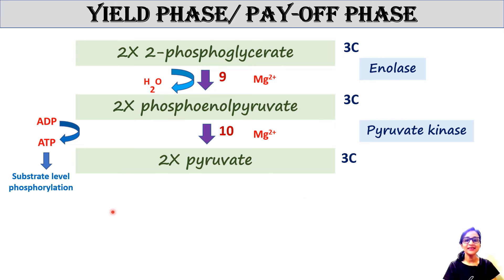Each molecule of 2-phosphoglycerate is converted into phosphoenolpyruvate by the enzyme enolase, with magnesium as a cofactor. In this reaction, dehydration occurs.